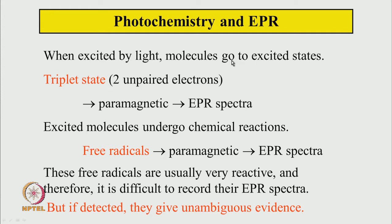Most molecules in the ground state are singlet — all electrons are paired. The first excitation usually brings the molecule to the singlet excited state, and from the singlet state the molecule can go to the triplet state. In the triplet state there are two unpaired electrons, and you know that unpaired electrons mean the system is paramagnetic. So it will be a paramagnetic species.